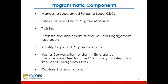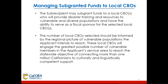The programmatic components include managing subgranted funds to local CBOs, using Listos California grant program materials, training, establishing and implementing a peer-to-peer engagement approach, identifying gaps and proposed solutions, hosting a conversation to identify emergency preparedness needs of the community for integration into local emergency plans, and capturing stories of impact. The subrecipient may subgrant funds to a local CBO who will provide disaster training and resources to vulnerable and diverse populations, and serve as a fiscal sponsor for the selected local CBO. The number of local CBOs selected should be informed by the regional picture of vulnerable populations the applicant intends to reach.